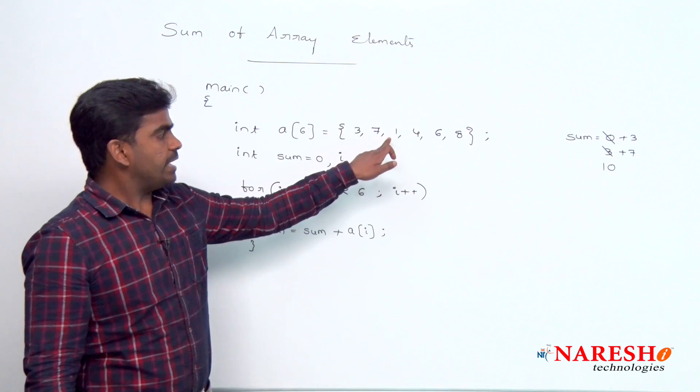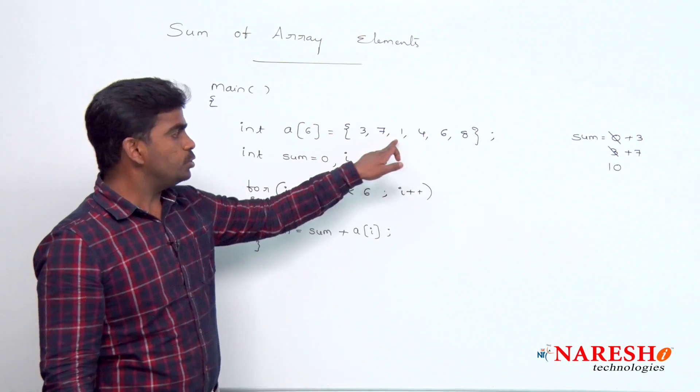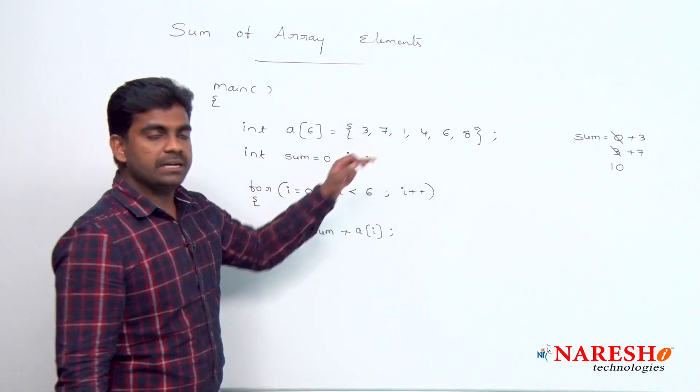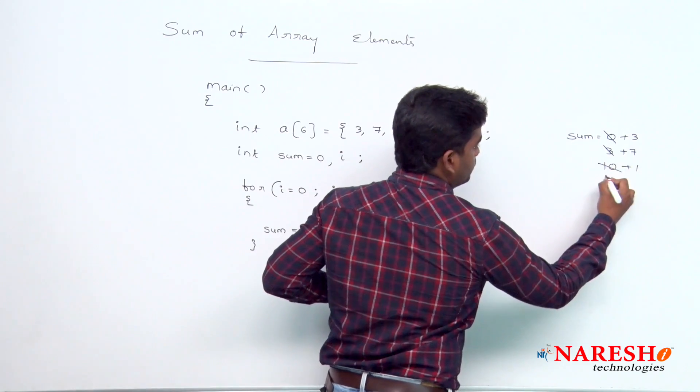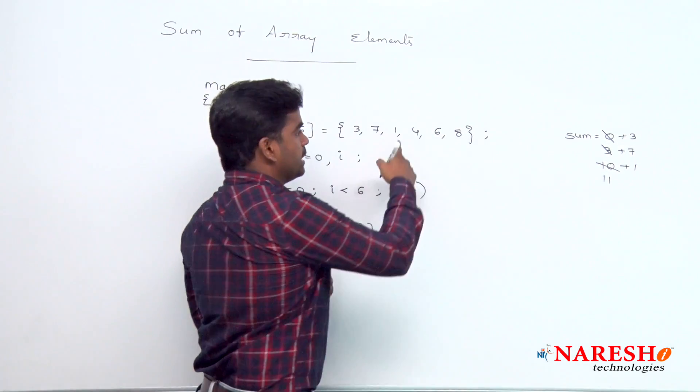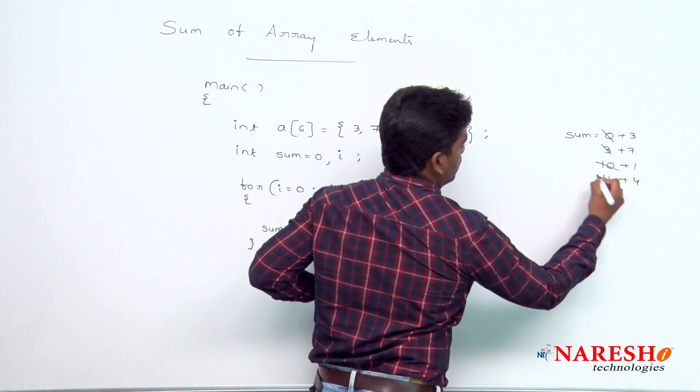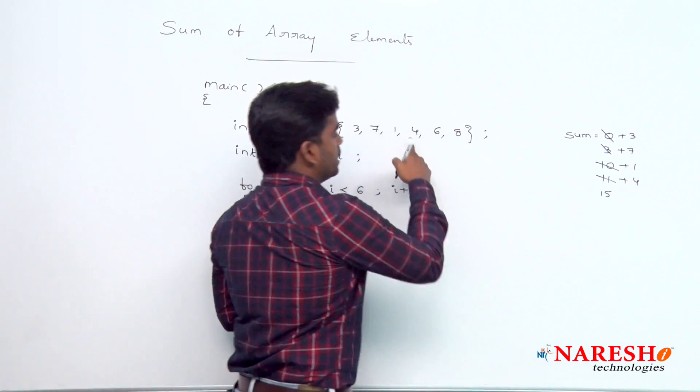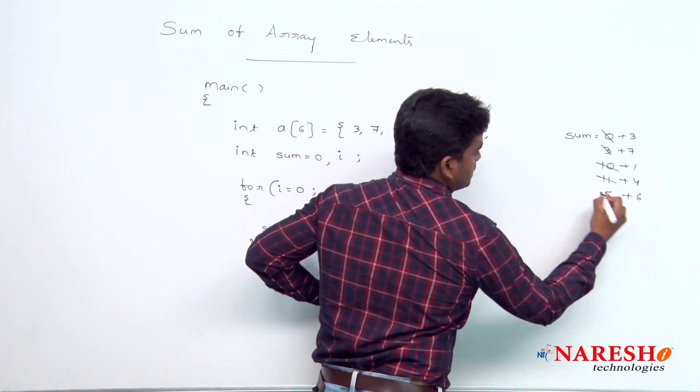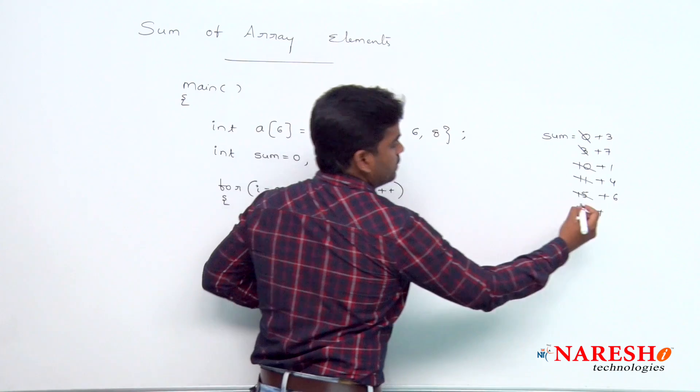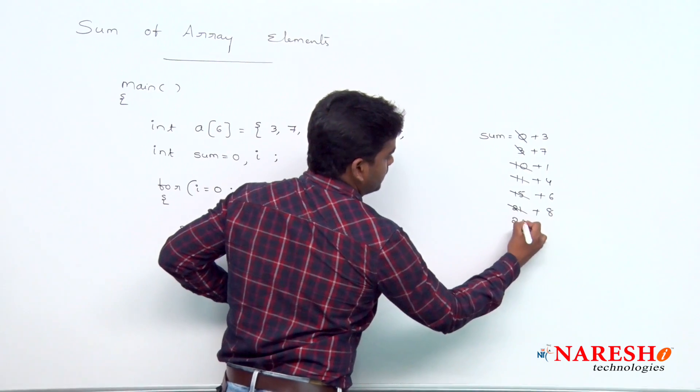In the next iteration, i value becomes 2. That second location element is 1. So 10 plus 1, value becomes 11. It will continue. 11 plus 4, value is 15. Next one, 15 plus 6, value becomes 21. Next one, 21 plus 8, value becomes 29.